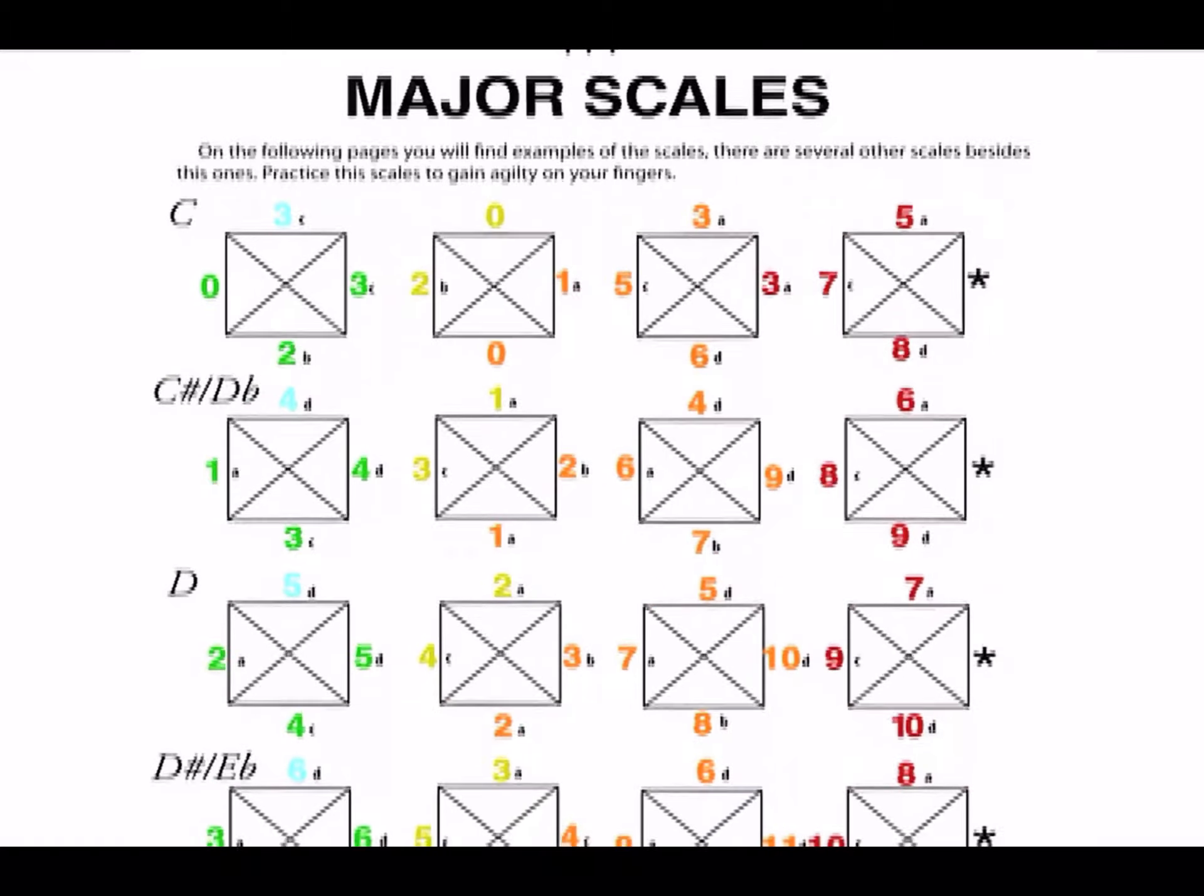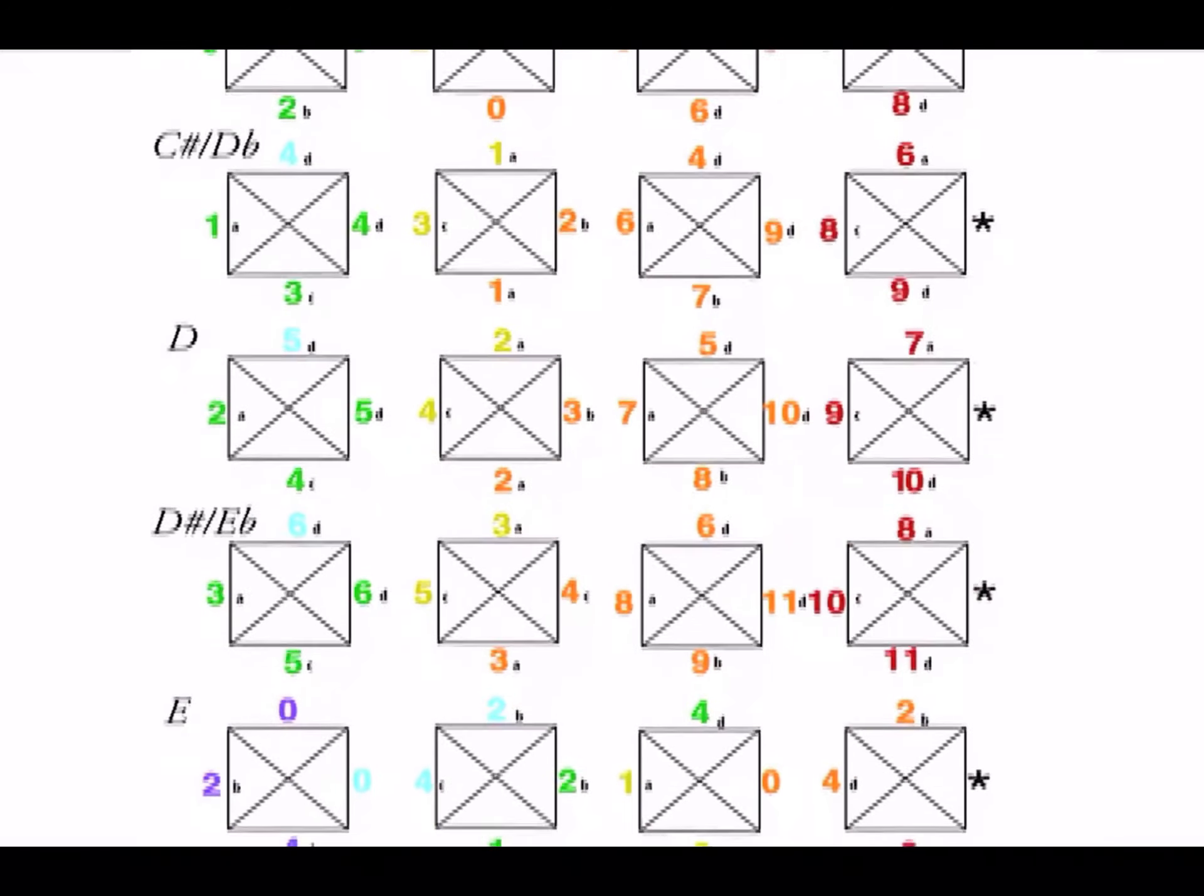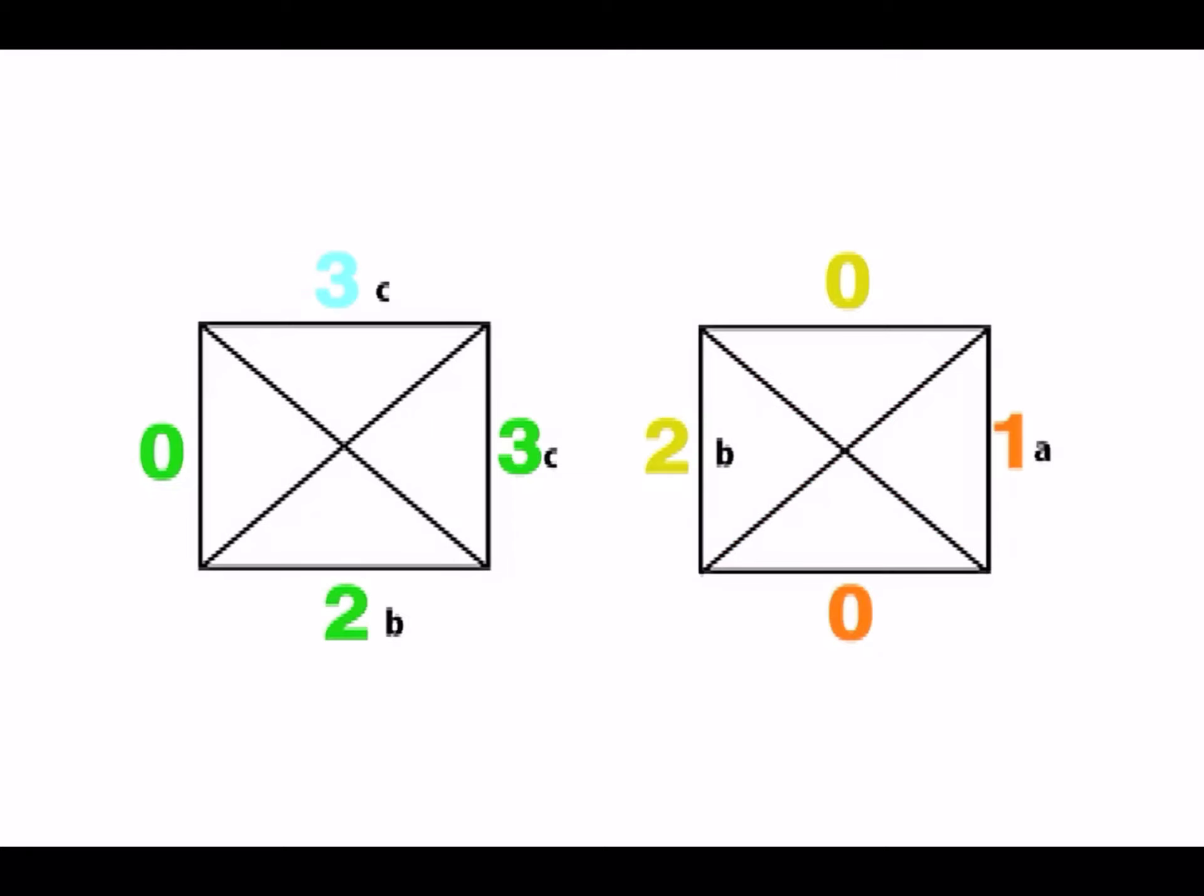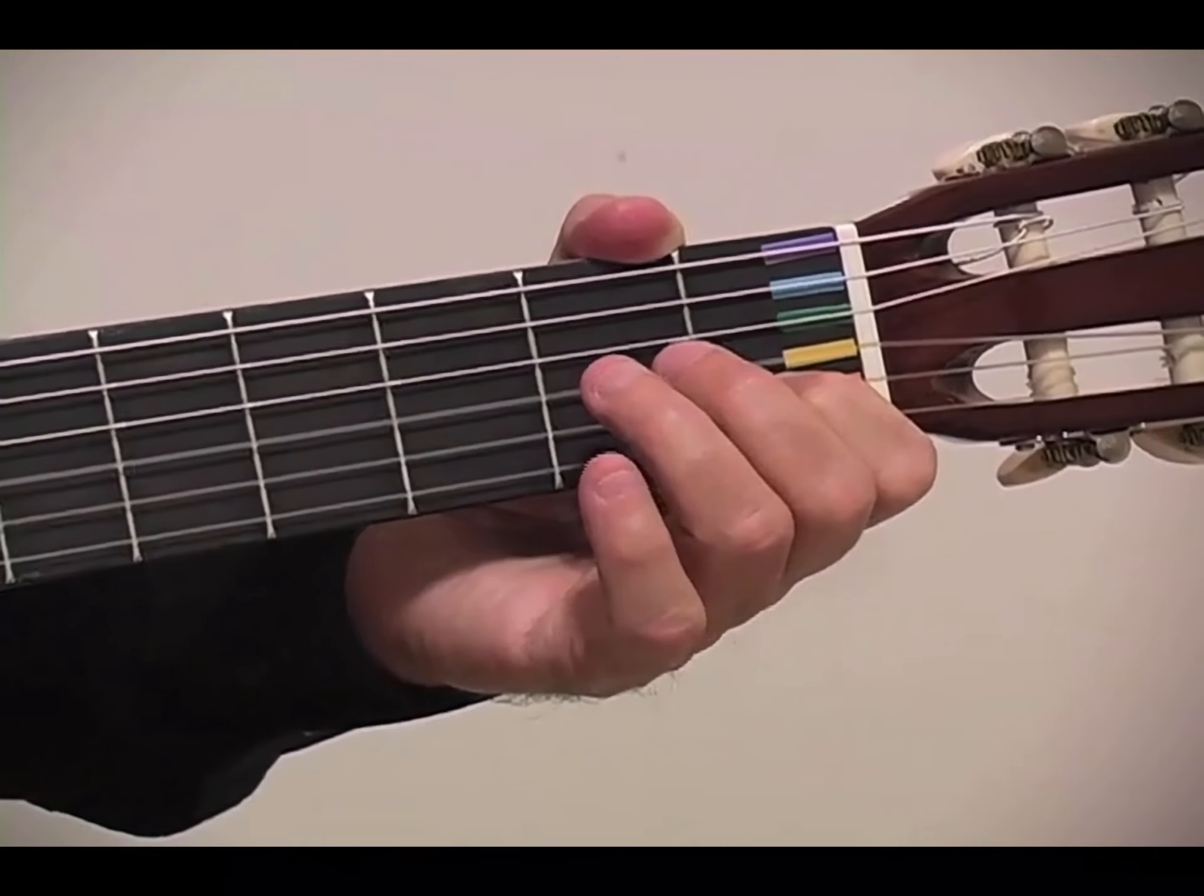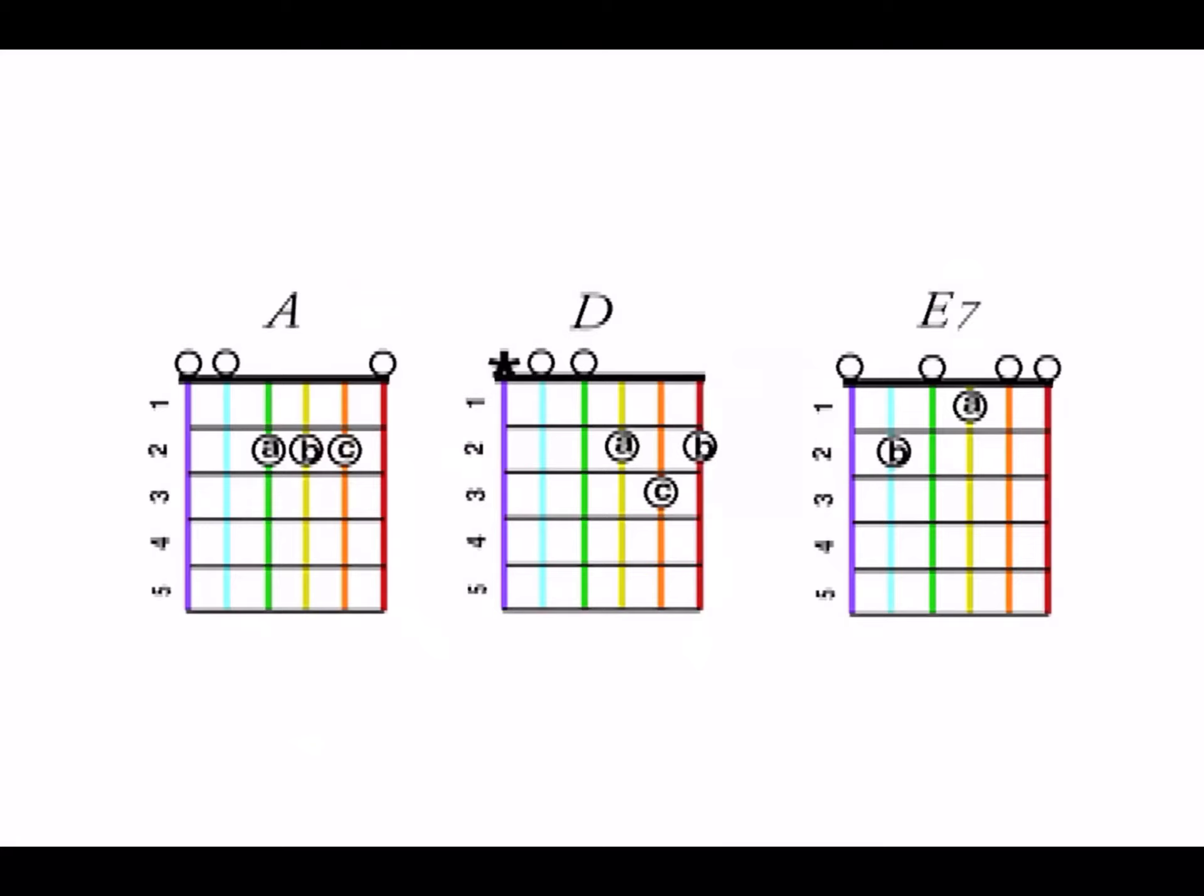Starting on page 114, you will see some examples for scales and what finger to use to play these. We recommend practicing these scales to gain dexterity with your fingers and to become better acquainted with correct finger positioning. An example of the first two measures of the Do, or C, major scale. On page 135, we show you some combinations of chords. Let's see again the combination of three chords of La, or A.